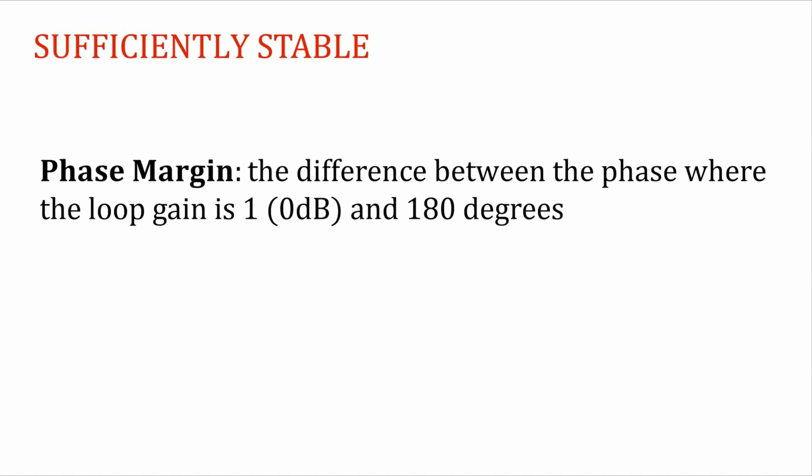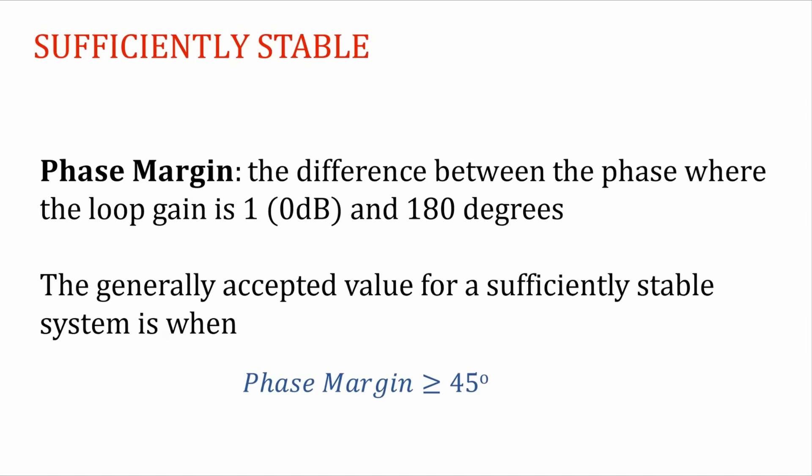And it's the phase difference between the phase where the loop gain is one or zero dB and minus 180 degrees. In other words, when the gain is one, how many more degrees of phase shift will you need until the phase is shifted 180 degrees? And the generally accepted value for a sufficiently stable system is when you have a phase margin that is greater than or equal to 45 degrees.